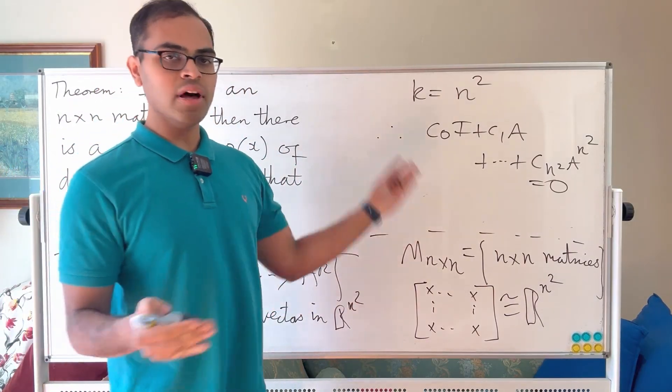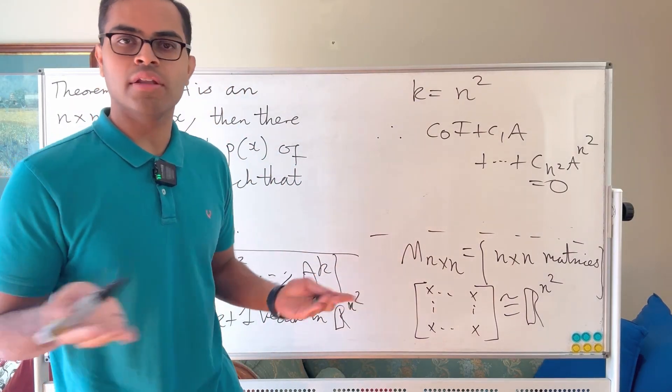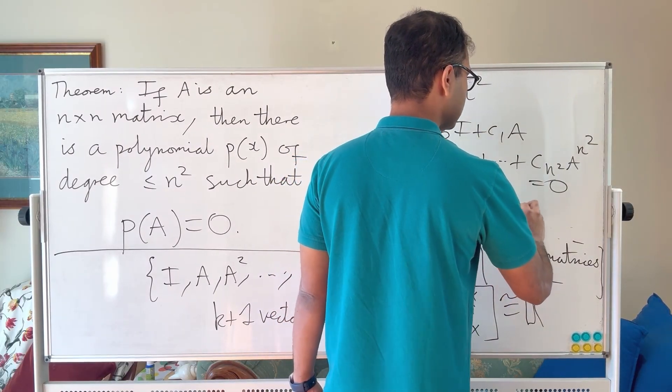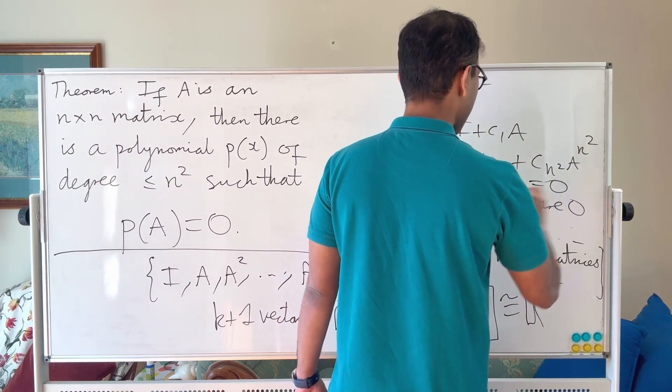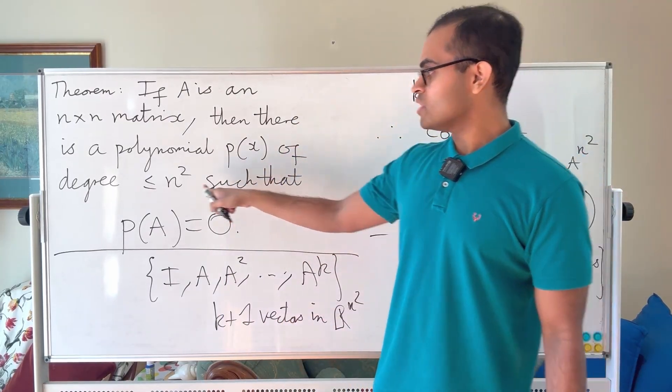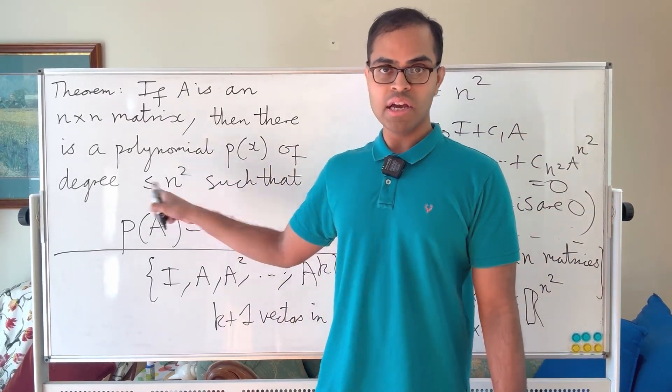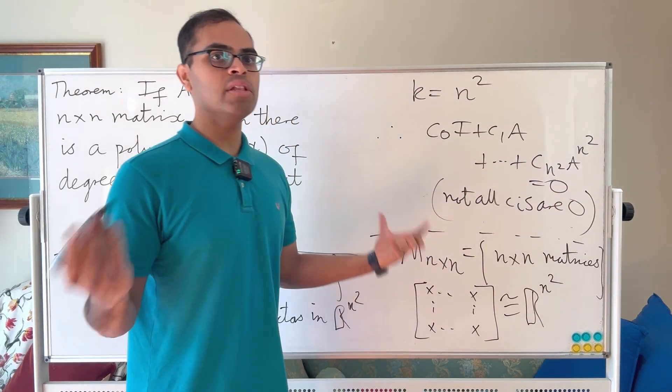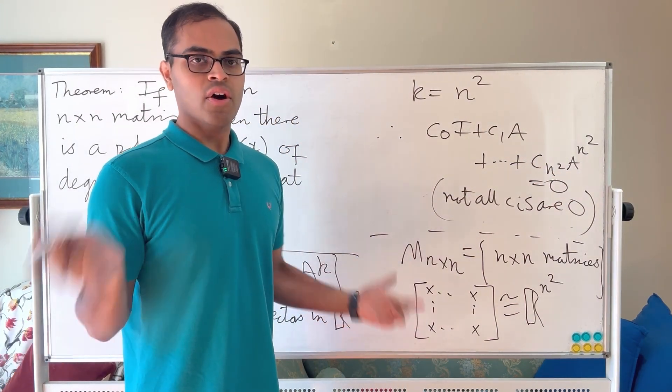So it's a non-trivial relation. If all the coefficients are zero, then that's of course always true. So where not all c_i's are zero. And that's our relation. And that's why I say that we can find a polynomial of degree less than or equal to n squared. It could be that this c_{n²} coefficient is zero. That could be. So then the polynomial would have degree less than n squared.